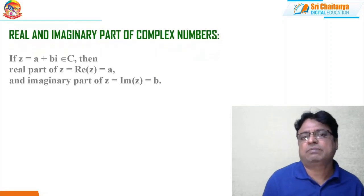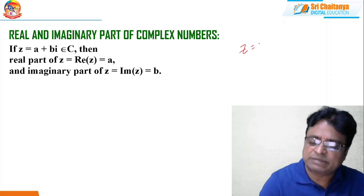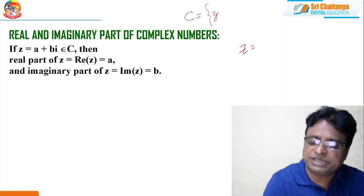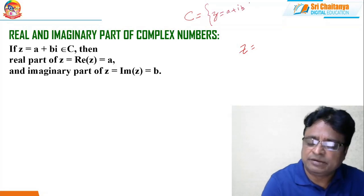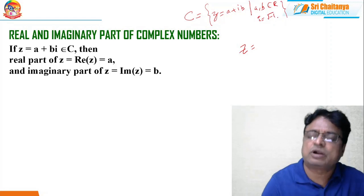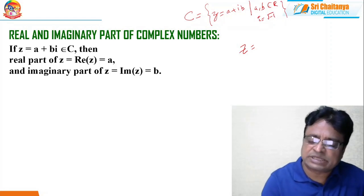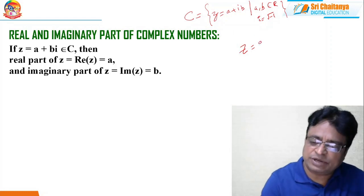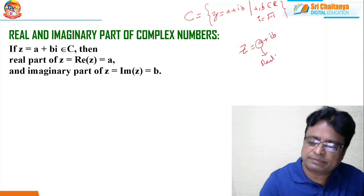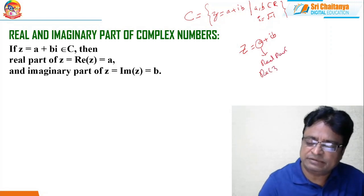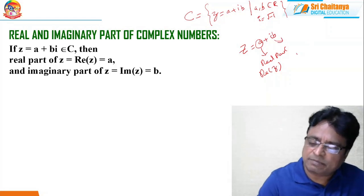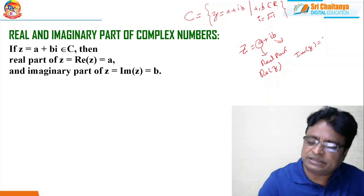Coming to real and imaginary parts of complex numbers. If z is a general complex number, the set of complex numbers is denoted with C. So, set C is equal to the set of all complex numbers of the form z = a + ib, where a, b are real numbers and i is a symbol representing √(−1), also called iota. In general, complex numbers are represented with small z. If z = a + ib, then the number a is called the real part of the complex number, usually denoted Re(z). And b represents the imaginary part of the complex number, denoted Im(z) — that is b, not ib.